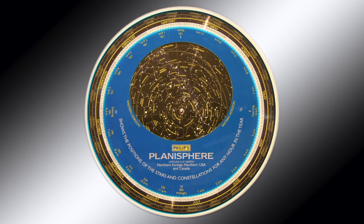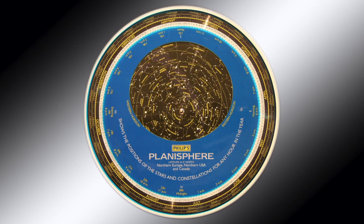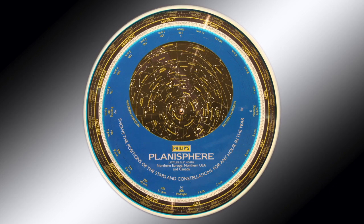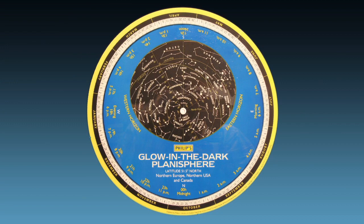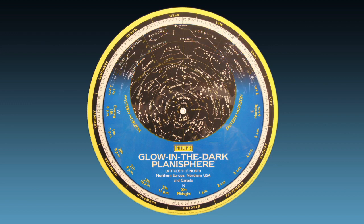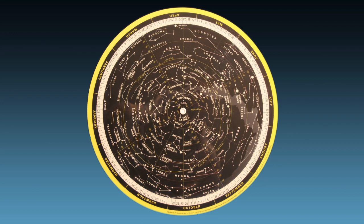The manufacturer of this particular planisphere — Phillips — have been producing these things for well over a century, so we can be reasonably content that their information is accurate. I'm one of those people with an irresistible urge to find out how things work, so my first instinct was to pull it apart. Phillips went one better and made a glow-in-the-dark version — it seems like a good idea but it's not as practical as one might think, though it does have one advantage: I can pull the whole ground mask off and see what's underneath.